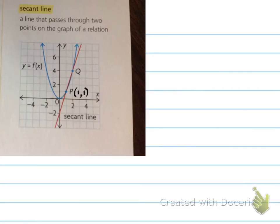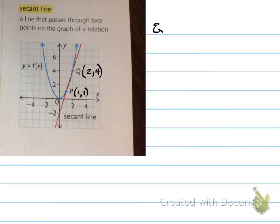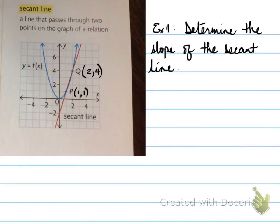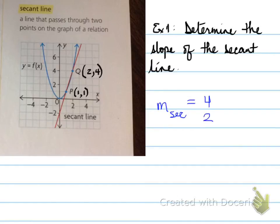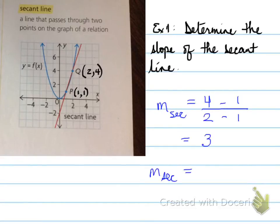Here's an example of a secant line on a curve. The secant line passes through points P and Q with coordinates (1, 1) and (2, 4). We're going to determine the slope of that secant line. The slope of a secant is delta y over delta x. Take one point and write it going upwards, take the second point going upwards, then draw three lines. What you get is 3 over 1, which equals 3.